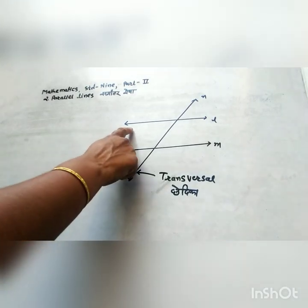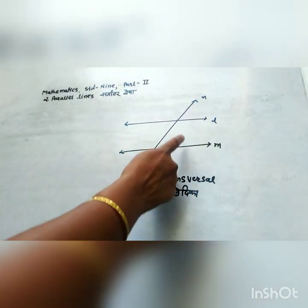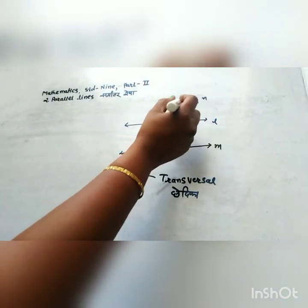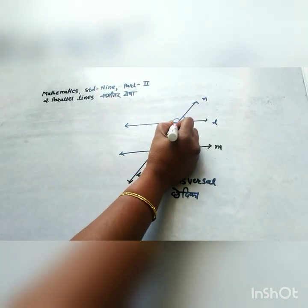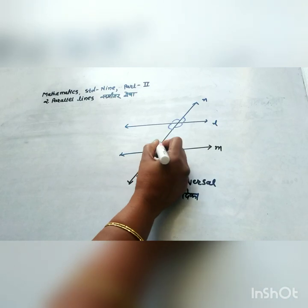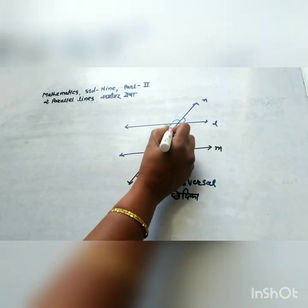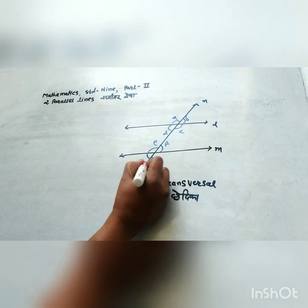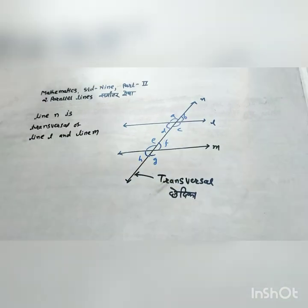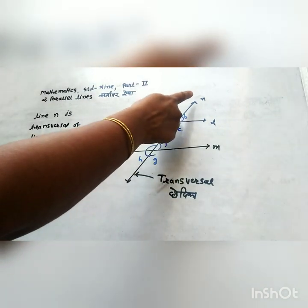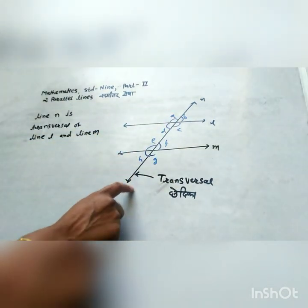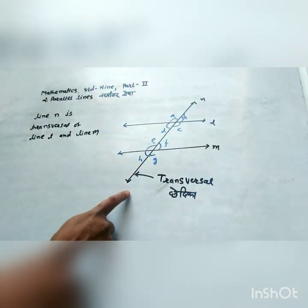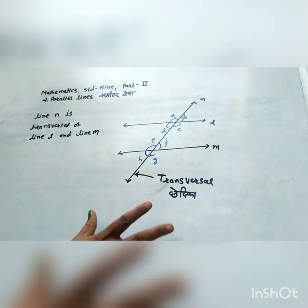Here are two lines L and M, and N is a transversal. Due to this transversal, eight angles are formed: A, B, C, D, E, F, G, and H. Line N is the transversal of line L and line M, and due to this transversal, eight angles are formed.